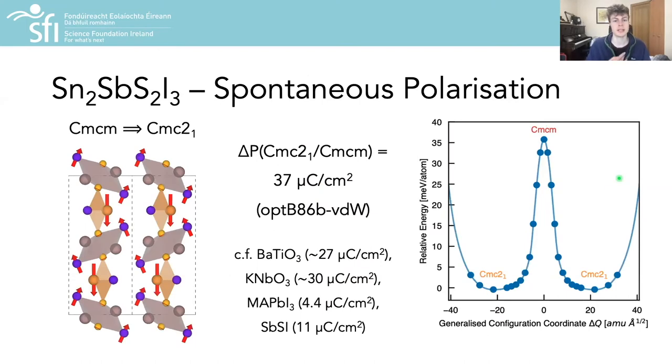Visualizing the CMCM to CMC21 distortion, we see that it corresponds to oppositely charged ions moving in opposite directions and therefore resulting in a relatively strong lattice polarization of 37 micro-Coulombs per cm², placing this material next to the likes of ferroelectric oxide perovskites such as barium titanate and potassium niobate in terms of polarization strength, well above MAPI and the archetypal photo-ferroic antimony sulfo-iodide.